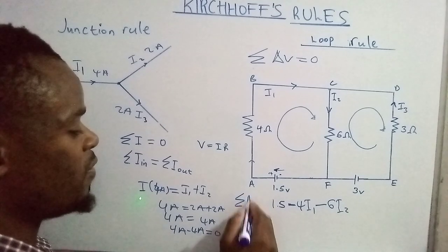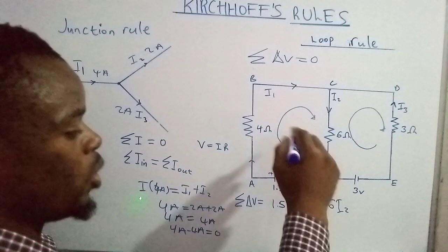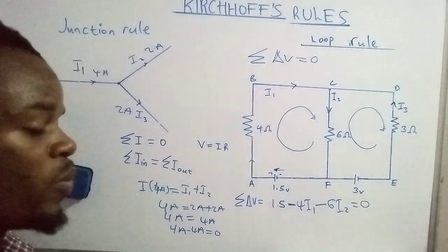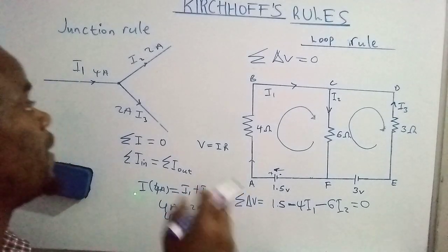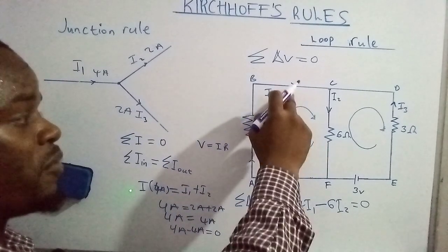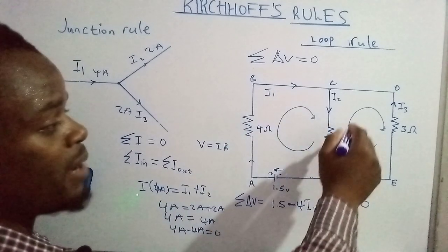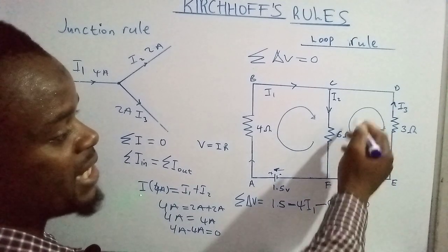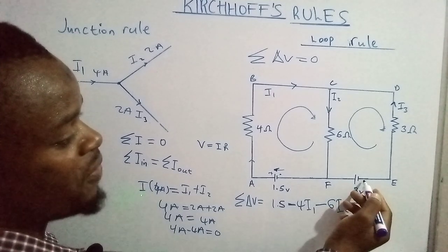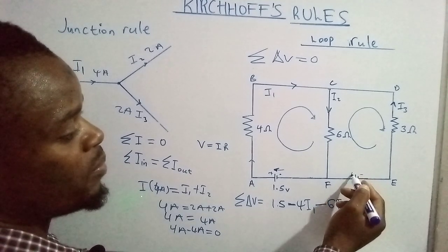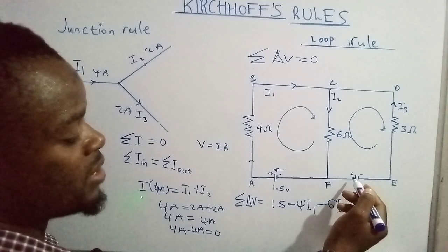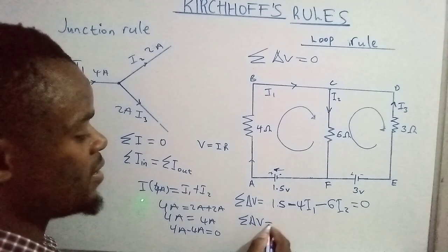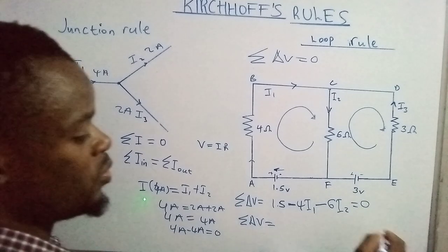The total summation of all the potential differences within a closed loop must equal zero. So after identifying all the potential differences around the loop, we set their sum equal to zero. This gives us the first loop equation.